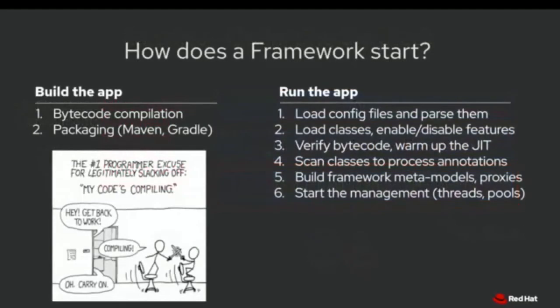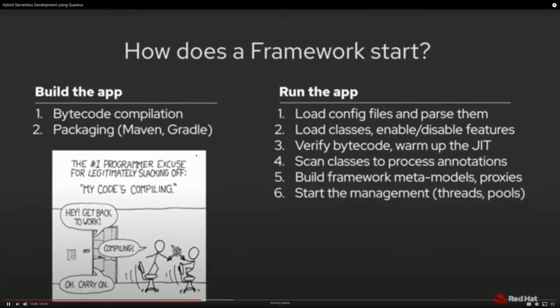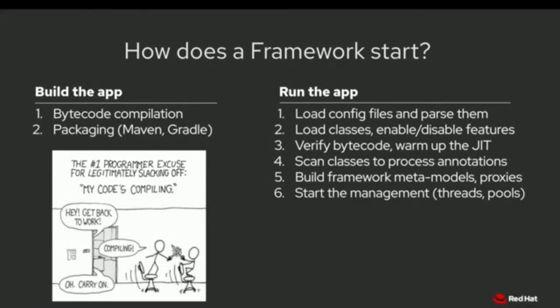You can also have two different runtimes — JVM mode or native executable via GraalVM. How does a typical Java application start? At build time it creates bytecode — also known as intermediate code — packaged using tools like Maven or Gradle. Then when you run that application on a production environment or local machine, the JVM first tries to load configuration files, enable or disable features, scan annotations, process descriptors, build the framework meta-model, create proxies, etc. In the end you actually start the application with threads and pools. Steps one through five are not related to the actual application startup at all.